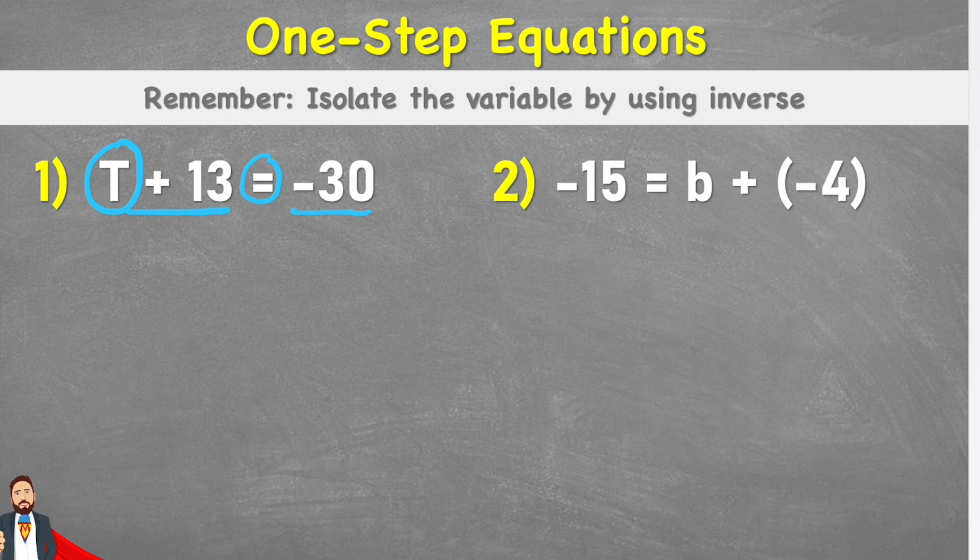So in order to find the value of T, I need to get T on its own. But at the minute, it's connected to this positive 13. So the only way to get rid of this positive 13 is by cancelling it out by inserting a negative 13 to that side of the equation. So let's rewrite that side and have T plus 13, negative 13 equals. And then because I've inserted a negative 13 to one side, I have to then put it on the other side to keep my equation balanced.